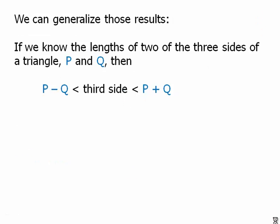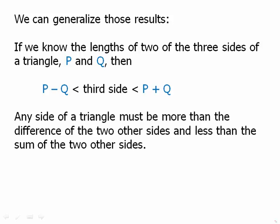Well, we can generalize this. If we know that the lengths of two of the three sides of a triangle, we know that they're P and Q, then the third side has to be greater than the difference and less than the sum. Any side of a triangle must be more than the difference of the other two sides and less than the sum of the other two sides. So this is an alternate way to state the triangle inequality.